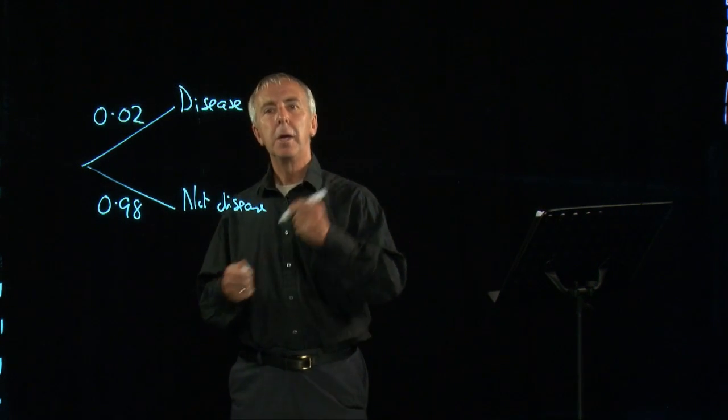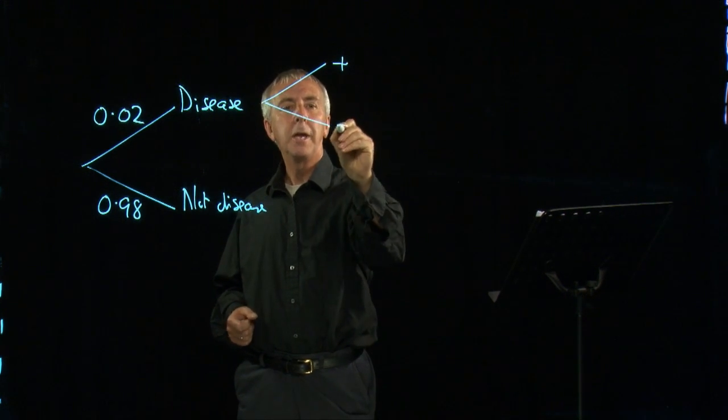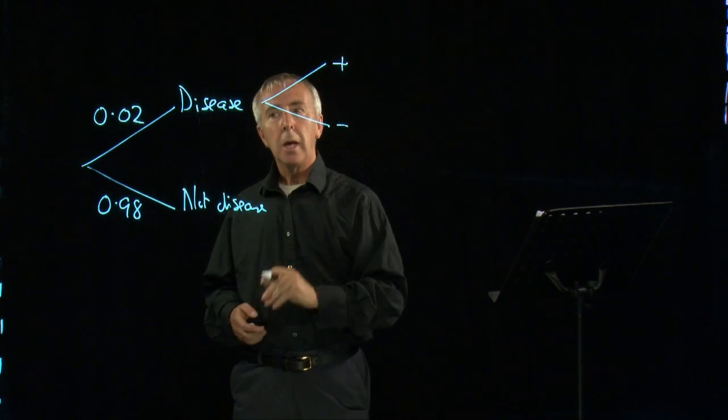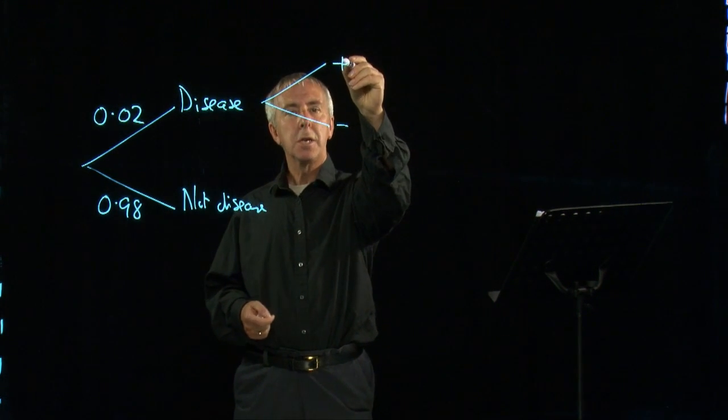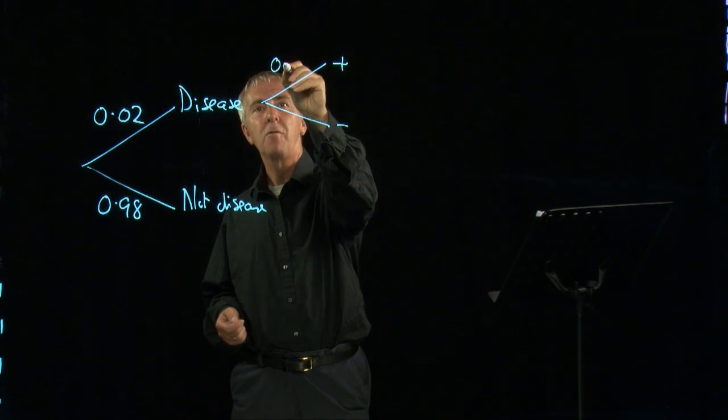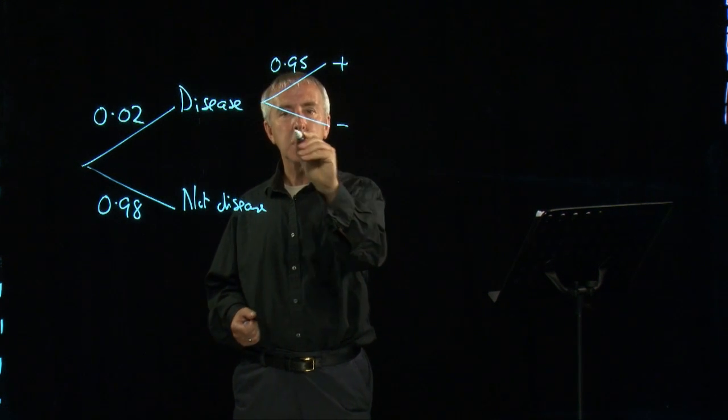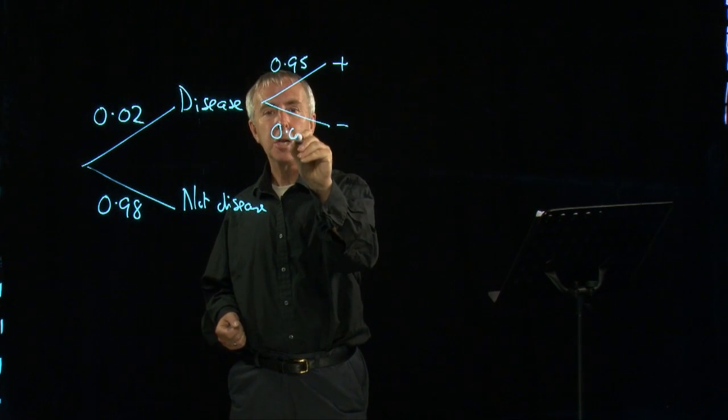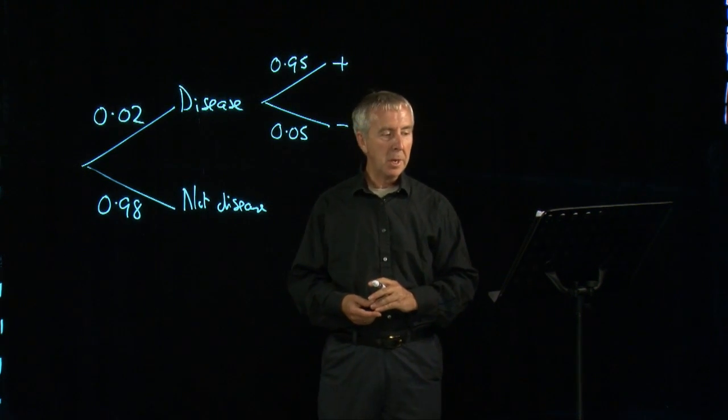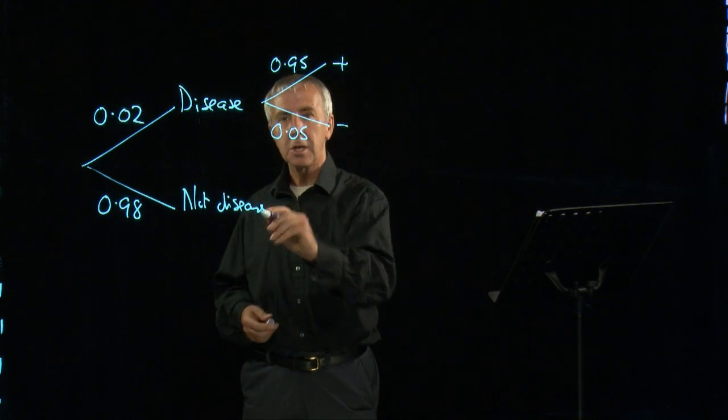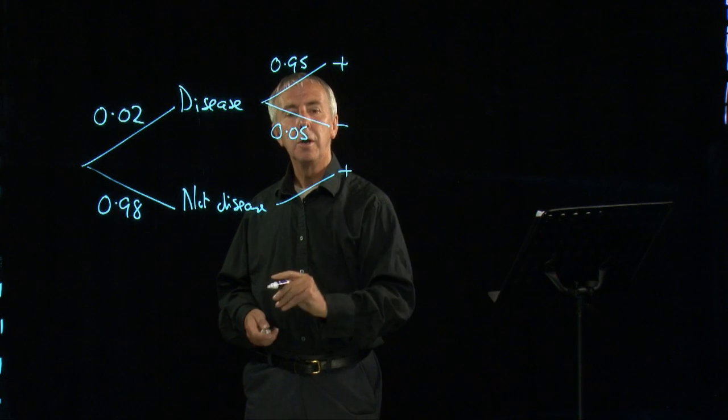So we then do the test. And the test either registers you positive or negative. If you have the disease, the test will normally pick it up. Let's say the chance that the test detects the disease is 95%. That means on 5% of the occasions the test will register you negative even though you have the disease. And that's reasonable. The problem is that even if you don't have the disease, no test is perfect.